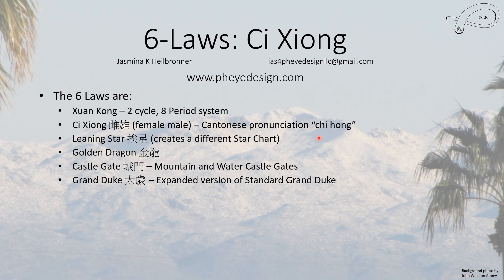The Cantonese pronunciation is Qihong, and I'm going to use that because I can say it much easier than the Mandarin pronunciation. If you want to look it up, you want to enter it in pinyin — that's the Mandarin romanization of these two characters — because you won't find it under 'Qihong.' There's also the leaning stars, and this video will be about Qihong; I do have another video about the leaning stars, which is a different type of star chart.